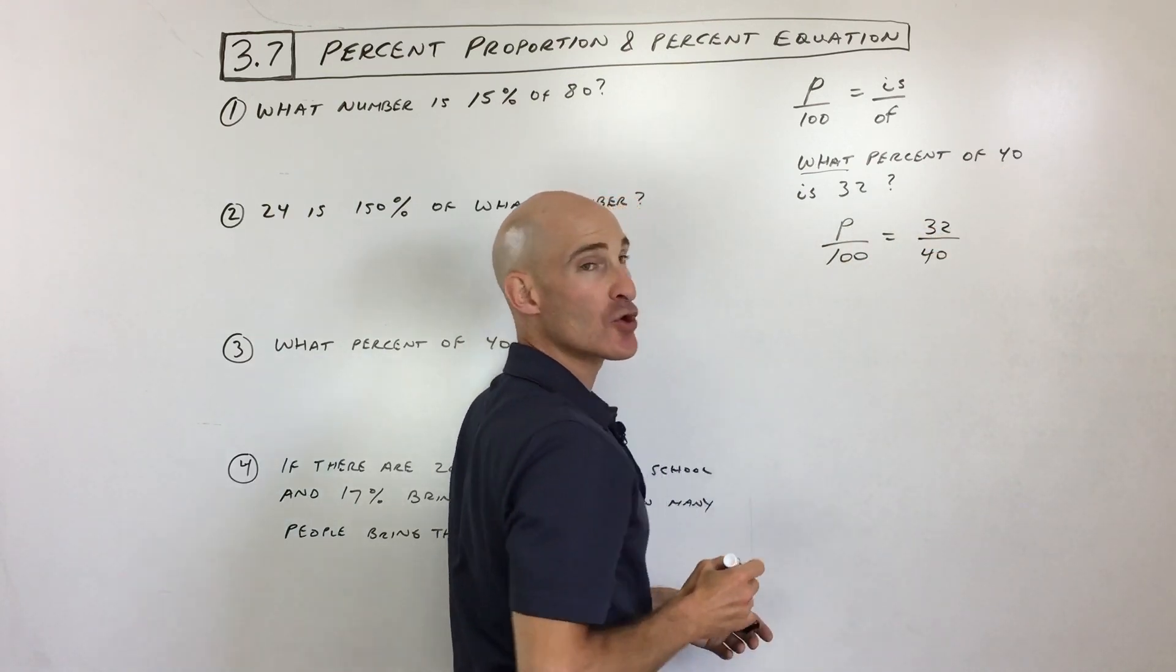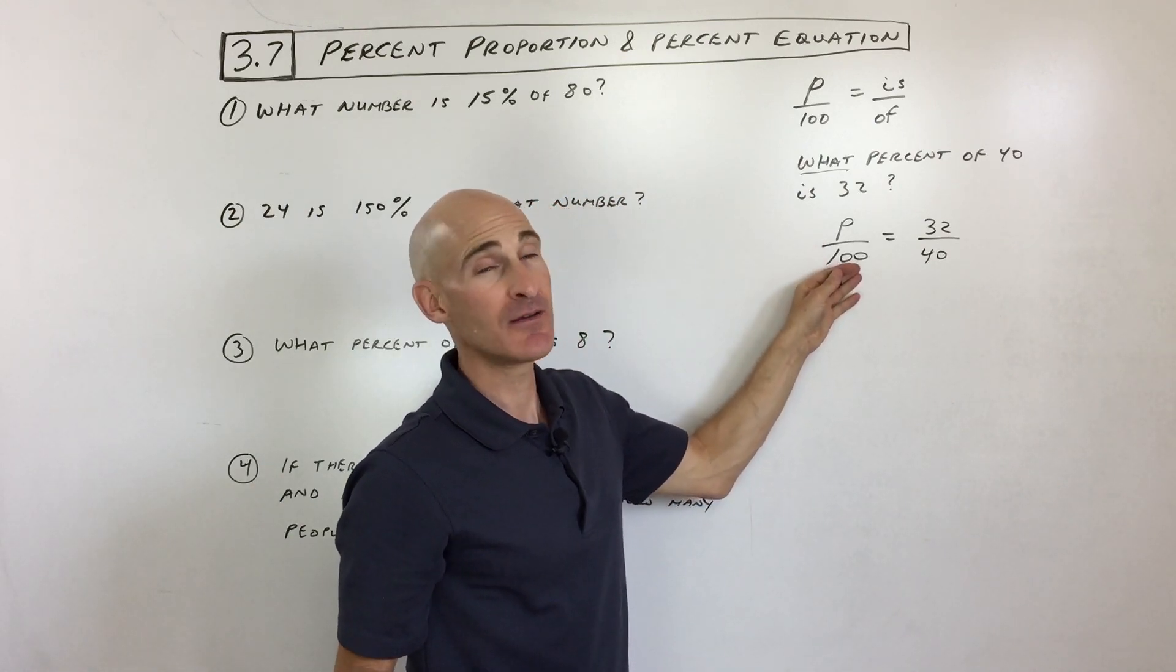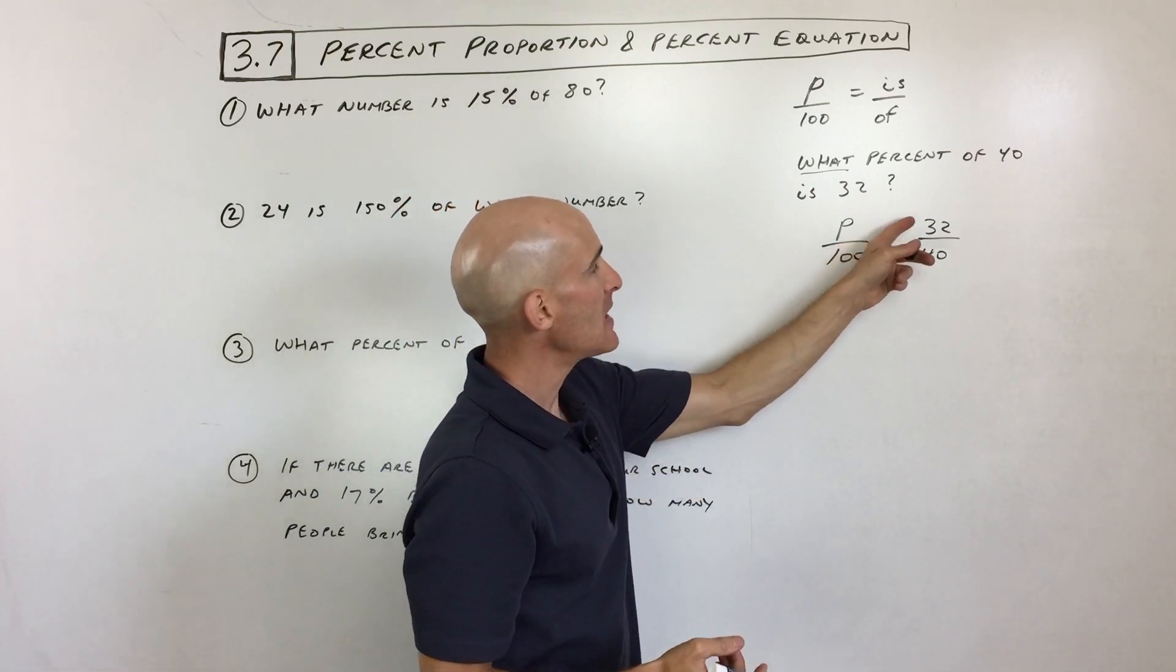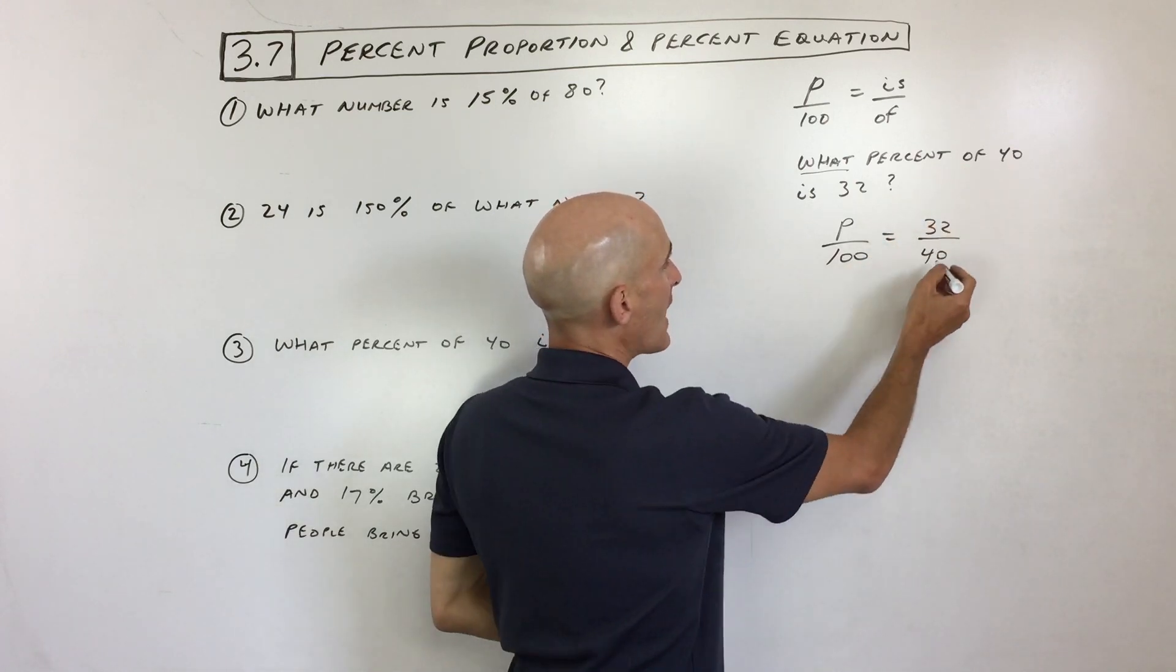That's the part out of the total. So the percent out of 100, percent means per 100. Okay, cent is like 100 cents in a dollar, 100 years in a century, right? So parts out of 100 equals 32 is the part out of the total, 40.